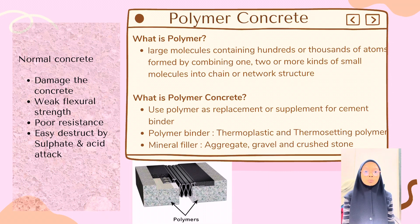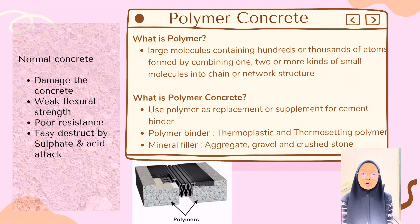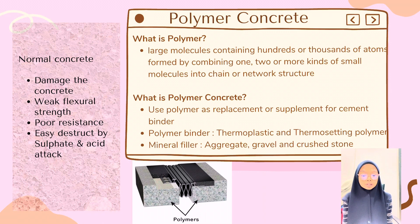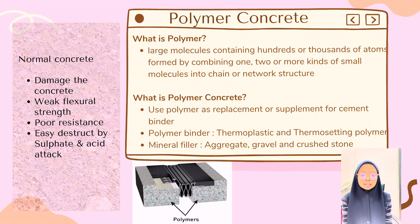What is polymer concrete? Polymer concrete is a type of concrete that uses polymer material as a supplement or replacement for the binder. The polymer binder, which may be thermoplastic but more frequently is a thermosetting polymer, is combined with mineral fillers like aggregates, gravel, and crushed stone. The addition of polymer in concrete results in polymerization of the monomer and aggregate mixture, where the polymer acts as a binder for aggregates, resulting in a composite concrete. The main technique in producing polymer concrete is to minimize the volume of voids between the aggregates.